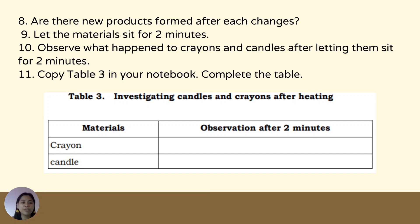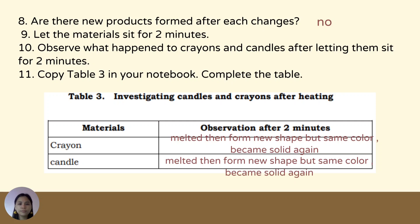Are there new products formed after each change? Let the materials sit for 2 minutes and observe what happened to crayons and candles. Observations after 2 minutes: The crayon melted and formed a new shape but the same color, then became solid again. The candle also melted and formed a new shape but the same color, then became solid again.